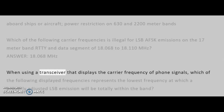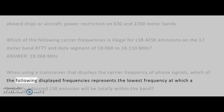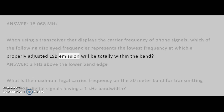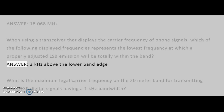When using a transceiver that displays the carrier frequency of phone signals, which of the following displayed frequencies represents the lowest frequency at which a properly adjusted LSB emission will be totally within the band? Answer: 3 kHz above the lower band edge.